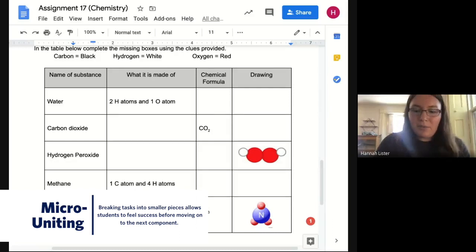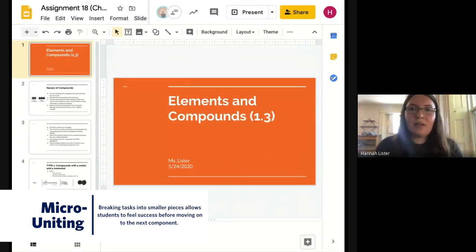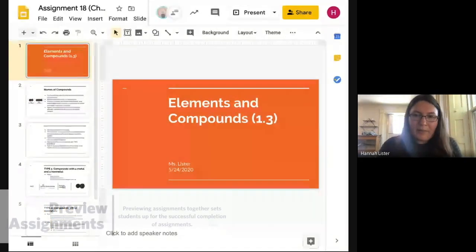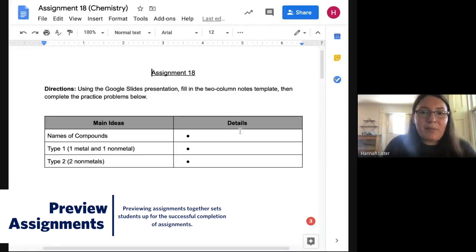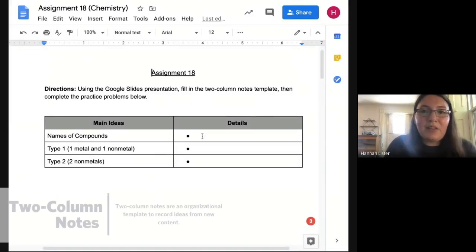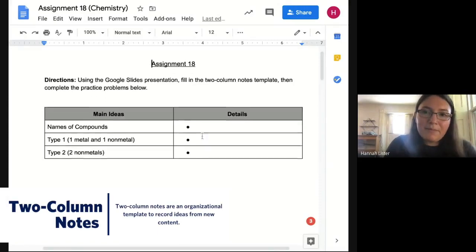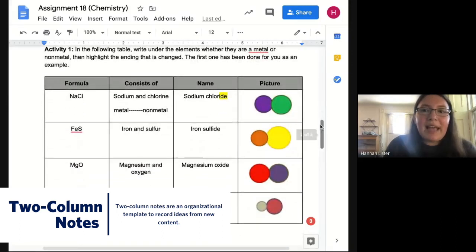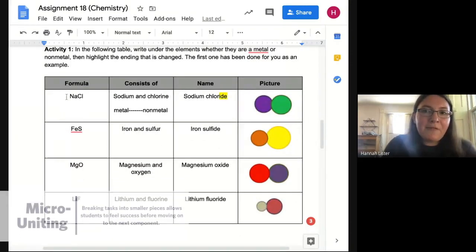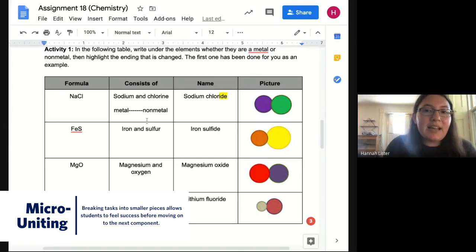So we're going to move on to assignment 18. All right. And we'll just preview this quickly and then I'll let you guys work on it on your own. So there's a two column notes template for you to fill out. There's only three main ideas for this one. So you can add in your details. And then there are three activities that you are going to complete. And the first one I did as an example.